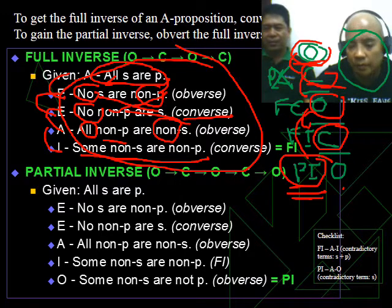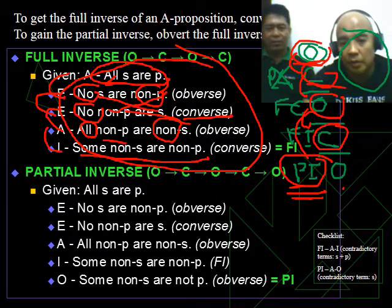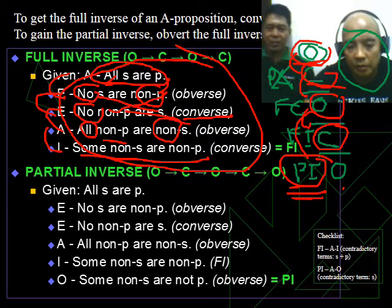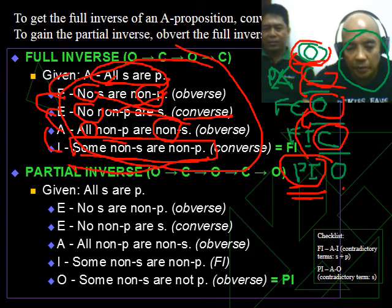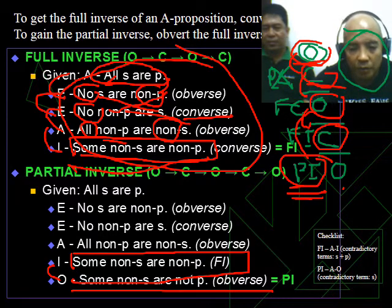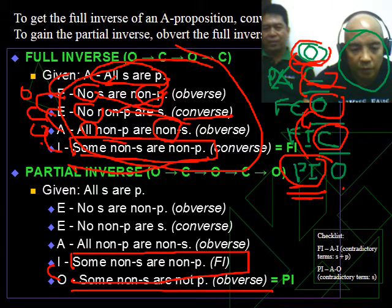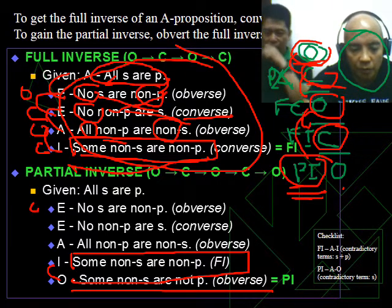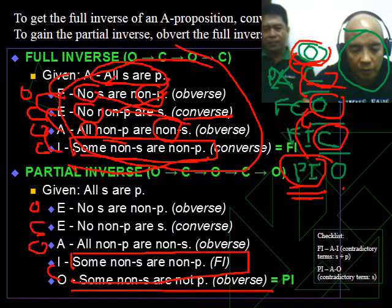The partial inverse is the obverse of the full inverse. So from all S are P, this becomes some non-S are non-P. This is OCOC. That's the longest process.